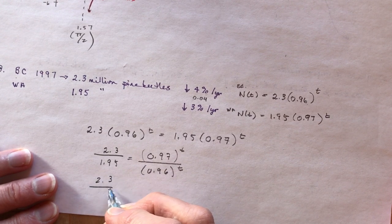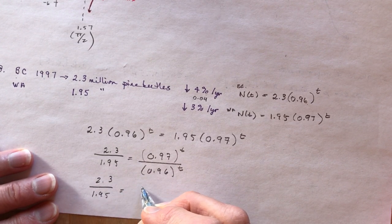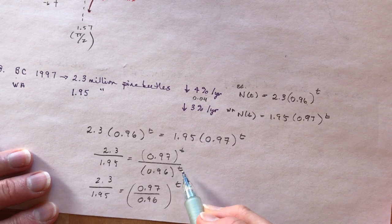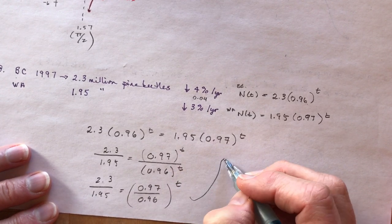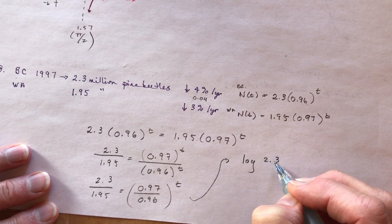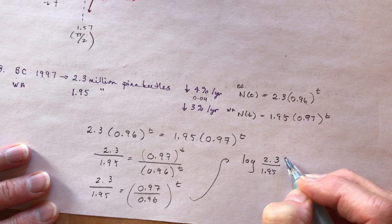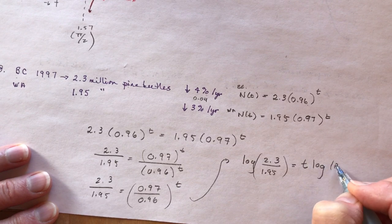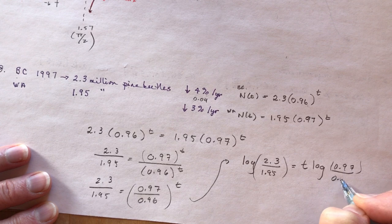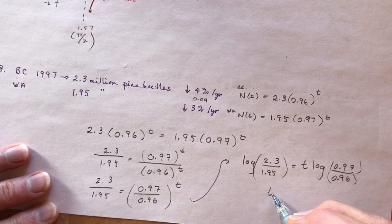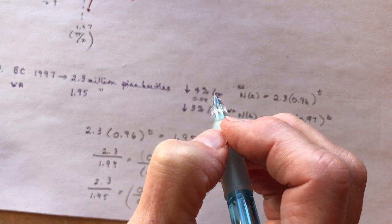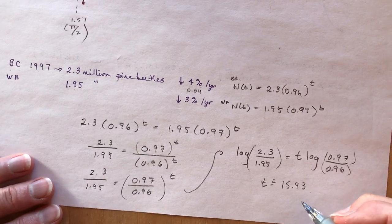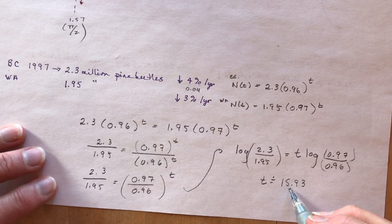Taking the log of both sides: log(2.3/1.95) = t × log(0.97/0.96). Solving for t gives approximately 15.93.